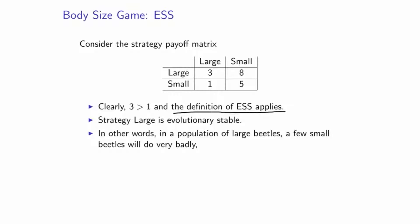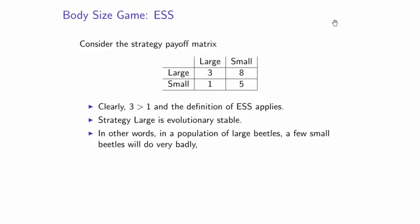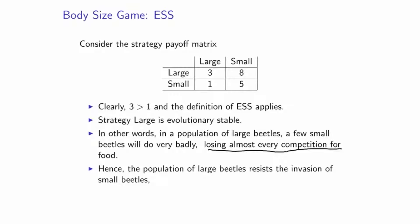In other words, in a population of large beetles, a few small beetles will do very badly. If we introduce an infinitesimal amount of beetles with small body size into a population of large beetles, those small beetles will do terribly — they will have a clear disadvantage in food competitions, losing almost every competition because of their body size. The population of large beetles resists the invasion of small beetles because the large phenotype is an evolutionary stable strategy.